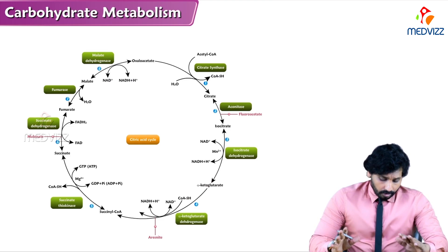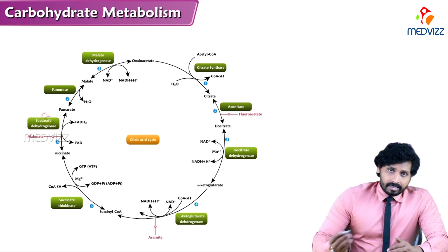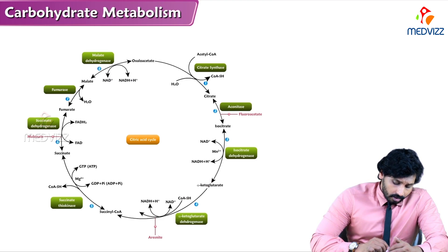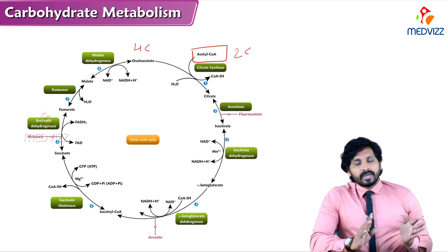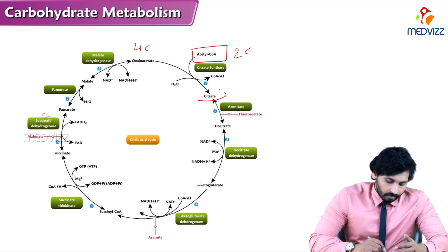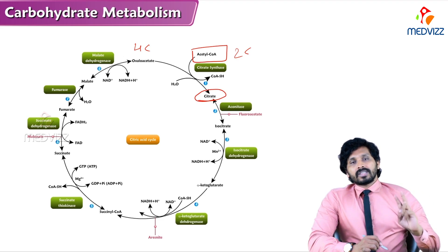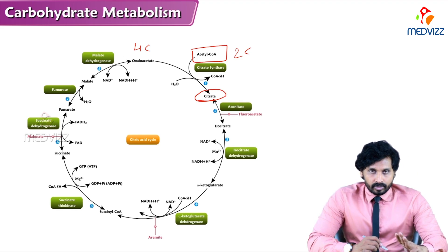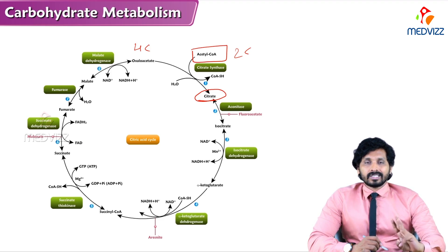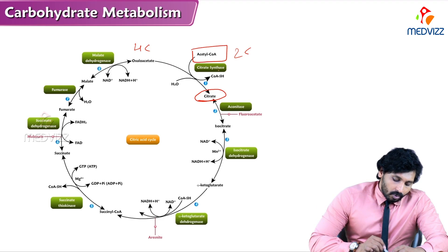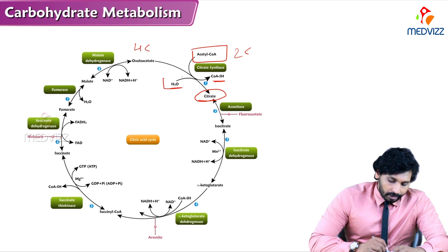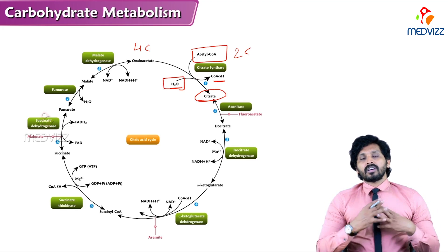Once acetyl-CoA enters the mitochondria, it is a 2-carbon compound. Oxaloacetate is a 4-carbon compound. This 4-carbon and 2-carbon combine to form 6-carbon citric acid. Citric acid has 3 carboxylic groups, which is why it is known as tricarboxylic acid cycle. The conversion of oxaloacetate and acetyl-CoA to citrate releases CoA by adding a water molecule, and the enzyme is citrate synthase.